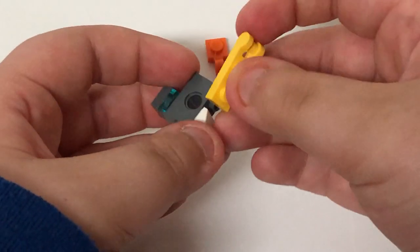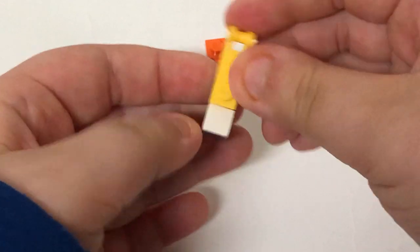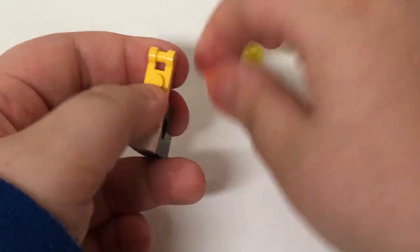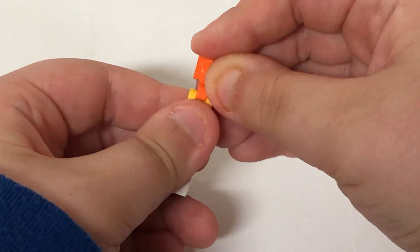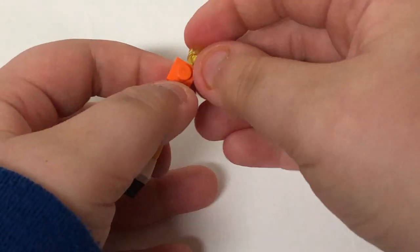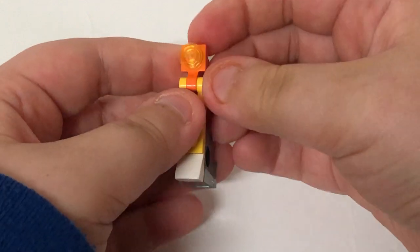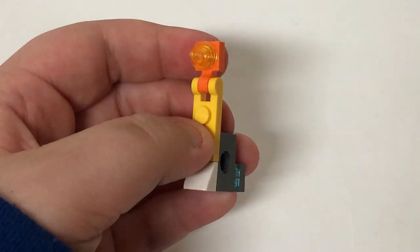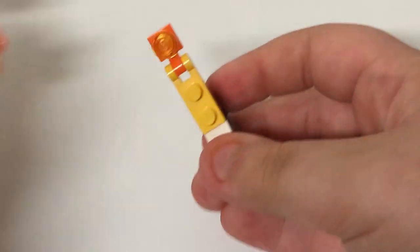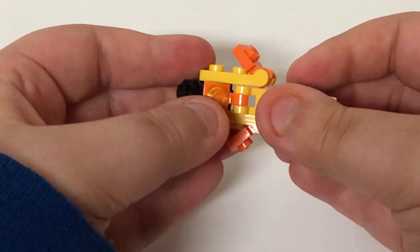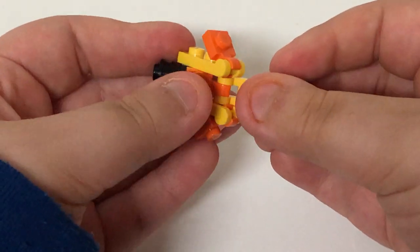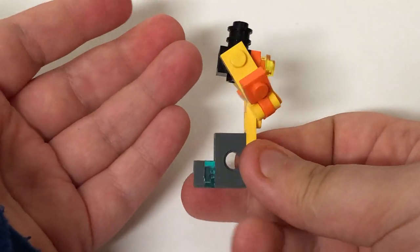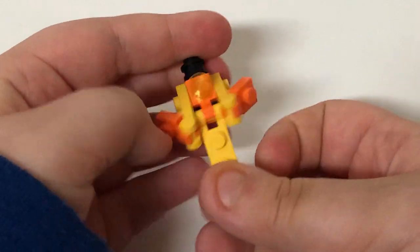You take the yellow one-by-two with a bar on the side. And then you take the orange one-by-one with clip. And then you grab the yellow transparent stud. And then you just take the two sections and combine them by just putting that right there. And there you have them in robot mode.